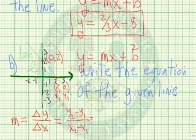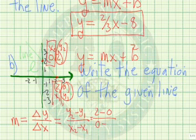Let's call this point x2, y2. So we take the second y minus the first y, divided by the second x minus the first x.